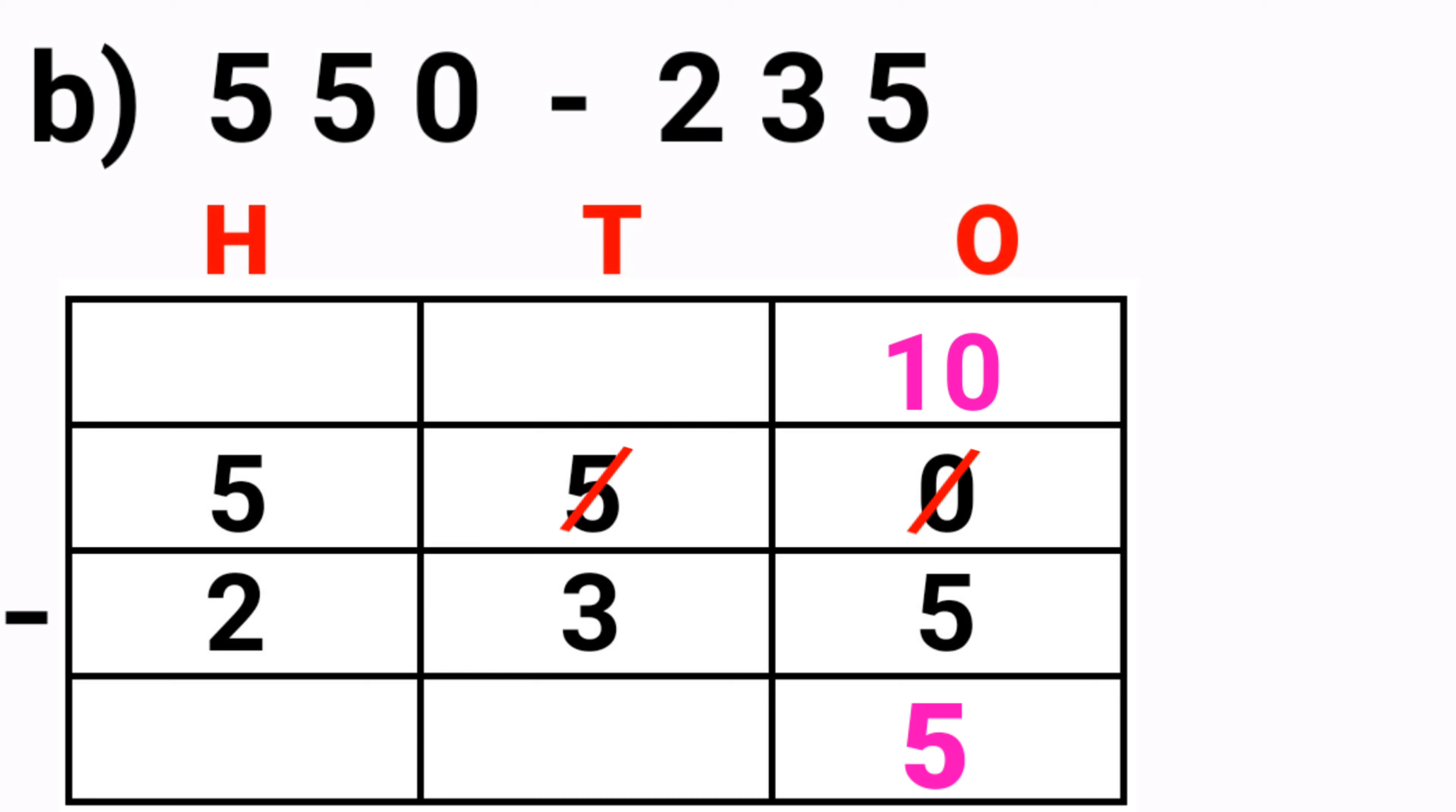Since we took 1 from 5, it will become 4. So 4 minus 3—3 after 4—so 4 minus 3 is equal to 1.